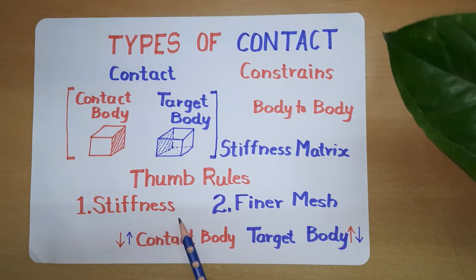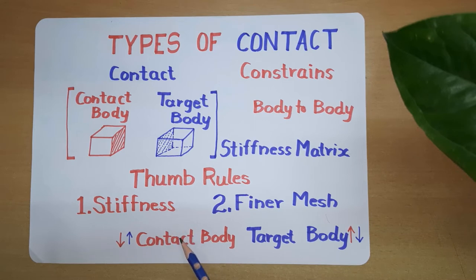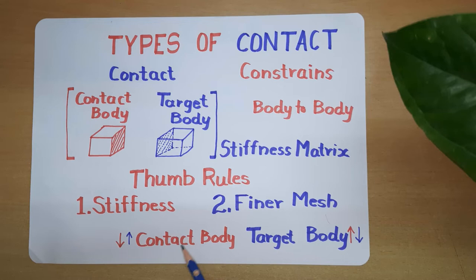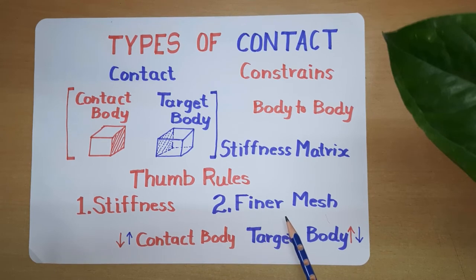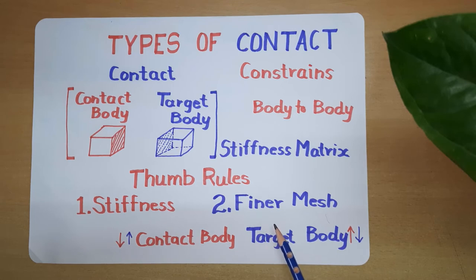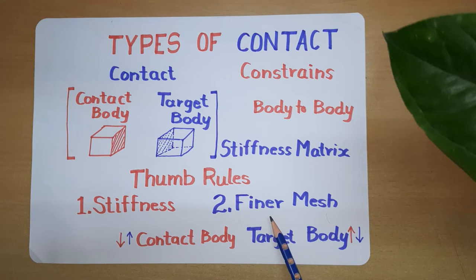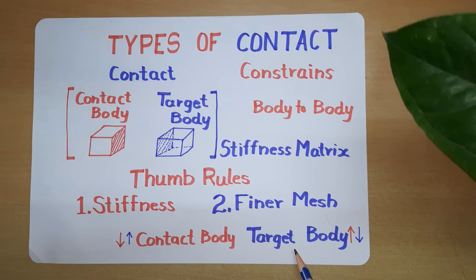When penetration happens inside the bodies during or after the analysis, we have to reverse these things. Based on finer mesh, we define the bodies. The second thumb rule: whichever body has finer mesh in your analysis is called the contact body, while the one with coarser mesh is called the target body.